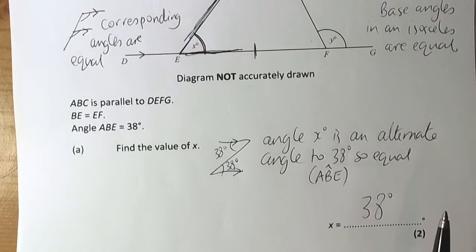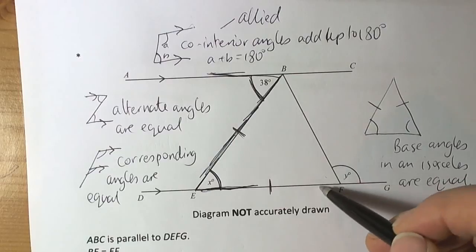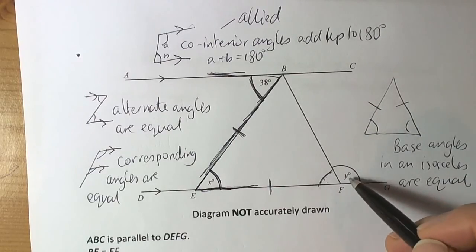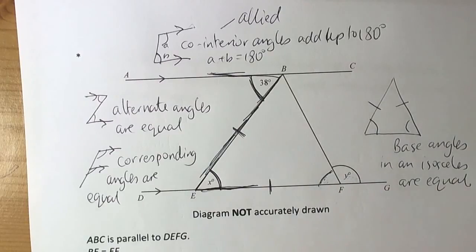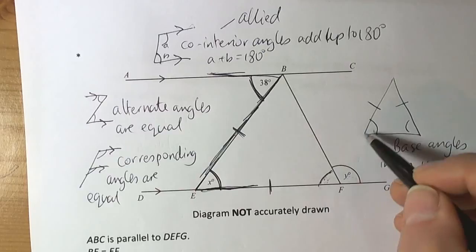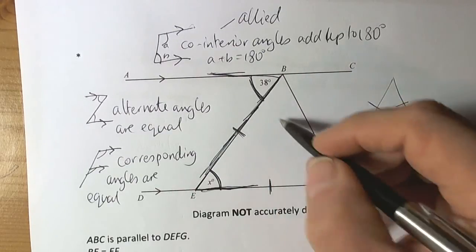The question then says find the value of Y. We can see from the picture that Y is on a straight line. So if I knew what this angle was, then I'm home and dry, because these two angles would have to add up to 180 degrees. But I can see that this angle is the base angle of an isosceles triangle.